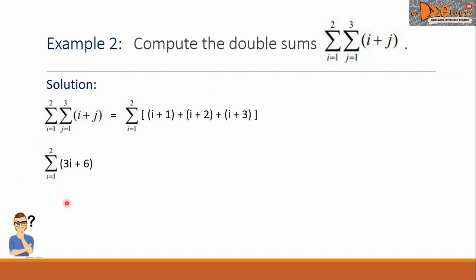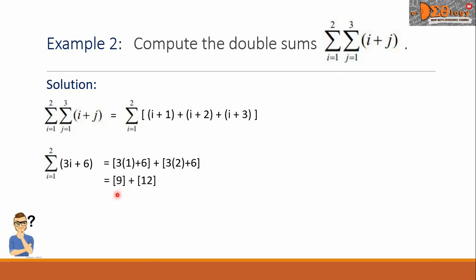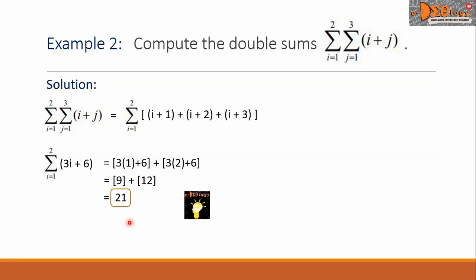We evaluate the single summation by replacing i with numbers from one to two. We get three times one plus six, plus the group three times two plus six. Simplifying each group: the first group gives nine and the second group gives twelve. Nine plus twelve is twenty-one. This is the value of the double sums.